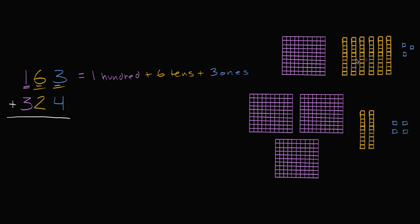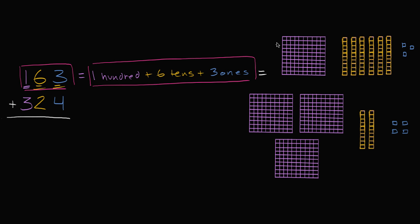And I've drawn that out here, where I actually draw 163 squares. You see it as 100, six tens — one, two, three, four, five, six tens — and three ones. So this number right over here, 163, it's the same thing as 100 plus six tens plus three ones. And if you want to think about what it looks like, this is 163 things. You see the 100, you see the six tens, and you see the three ones.